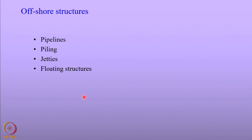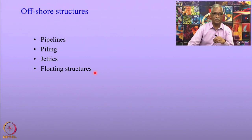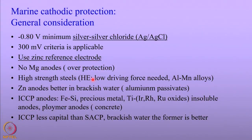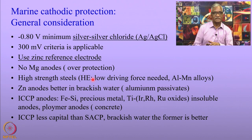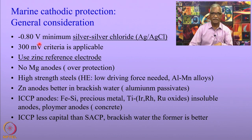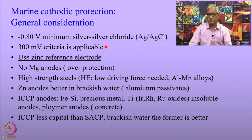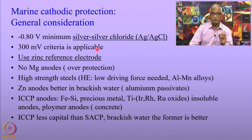Let us look at the offshore structures. The offshore structures discussed today are pipelines, pilings, jetties, and floating structures — all falling under marine cathodic protection. The general considerations include a cathodic protection criterion of minus 0.8 volts with respect to the silver-silver chloride electrode. Because the marine environment has more chlorides, the copper-copper sulfate electrode is seldom used; rather, the silver-silver chloride electrode is used. So the criterion for cathodic protection in marine environments is minus 0.8 volts.